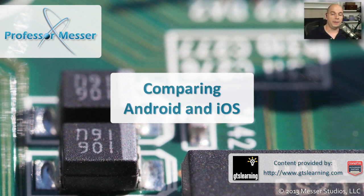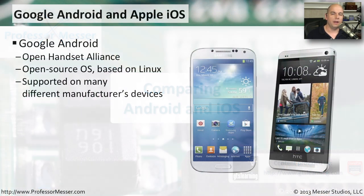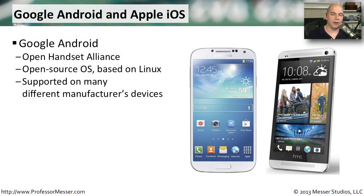There are certainly many companies that provide operating systems for mobile devices, and in this video we're going to focus on two of the largest: Google Android and Apple iOS. We often refer to the Android operating system as Google Android because Google is the company that started that operating system, but it's actually managed by a group called the Open Handset Alliance.